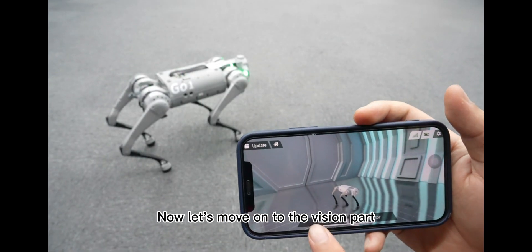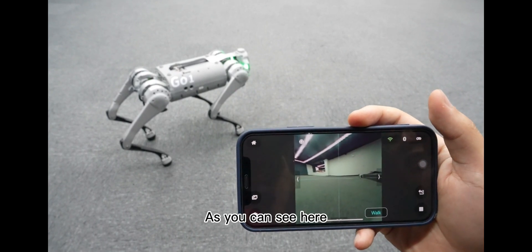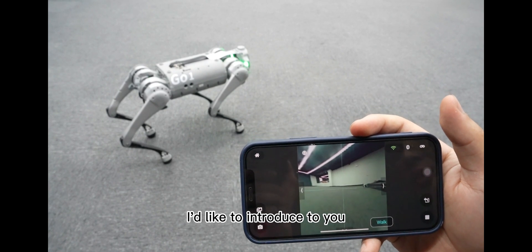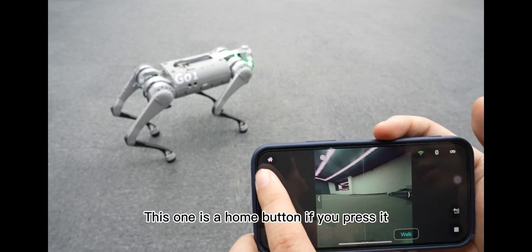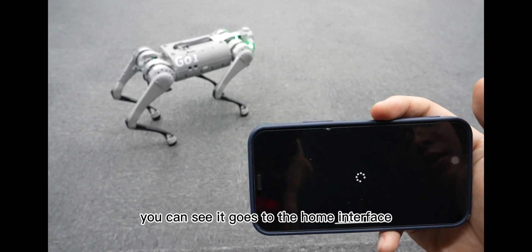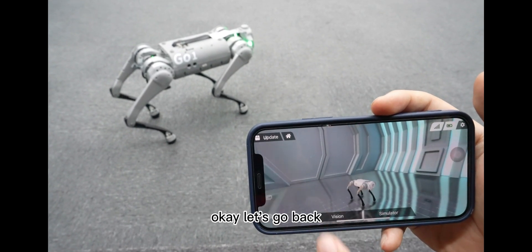Now let's move on to the vision part. As you can see here, there are a few buttons I'd like to introduce to you. So from the top left, this one is the home button. If you press it, you can see it goes to the home interface. Let's go back.